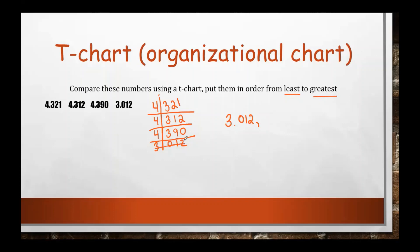We cross that one off and go back to what we're looking at. All remaining are fours, so we move to the next column — three, three, and three, all the same. We continue to the right: we have two, one, and nine. Out of two, one, and nine, the lowest is one. So our next number is four and three hundred twelve thousandths. Go ahead and cross this one off because we've used it.